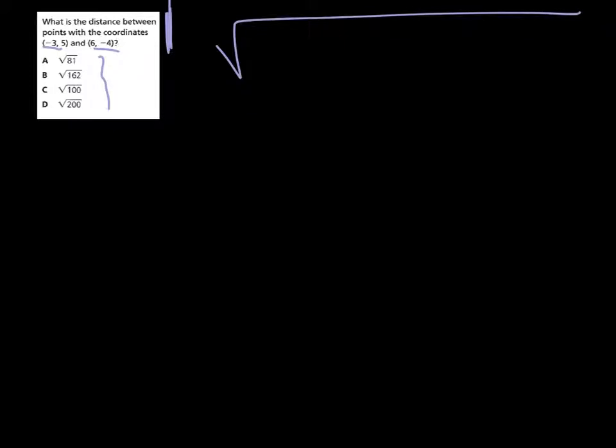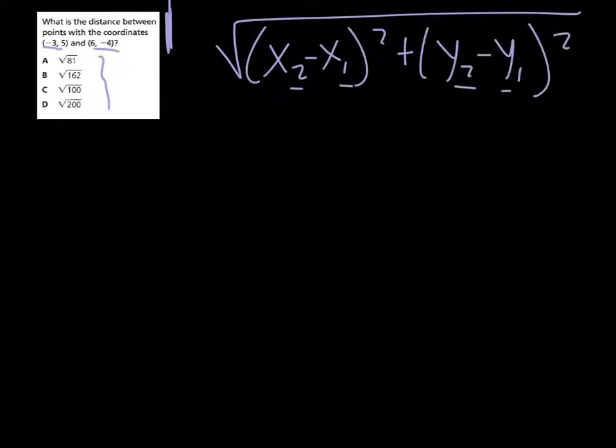Alright, and whenever you have that, you have √[(x₂ - x₁)² + (y₂ - y₁)²]. Okay, now these little numbers here, that just means like which coordinate it corresponds to.